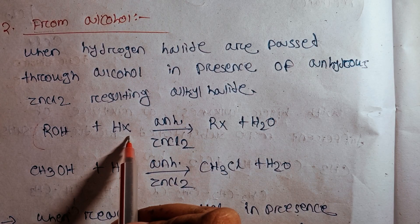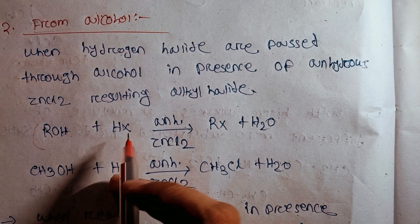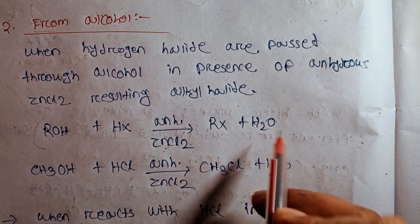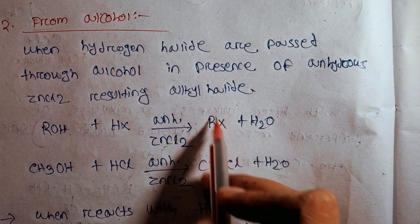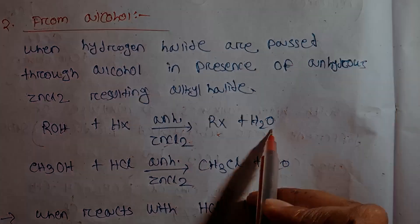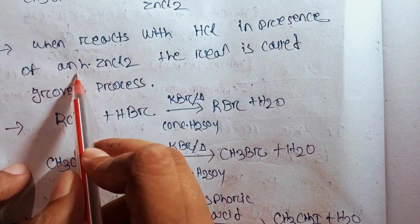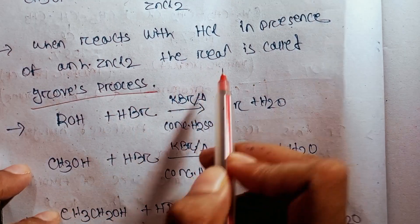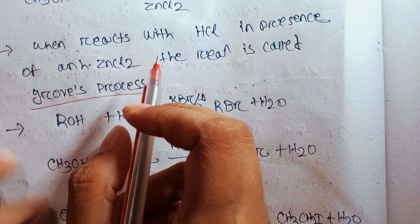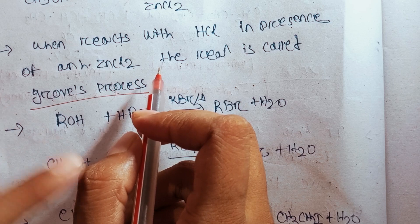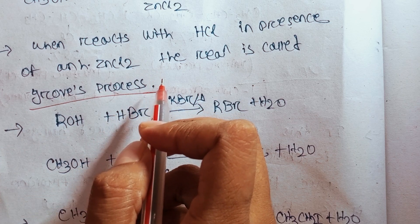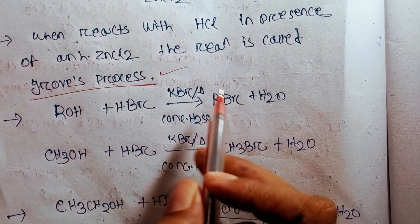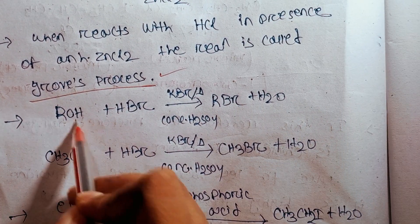This means the reaction of alcohol with HCl — this reaction is called Grove's process. So in Grove's process, alcohol reacts to give an alkyl halide.